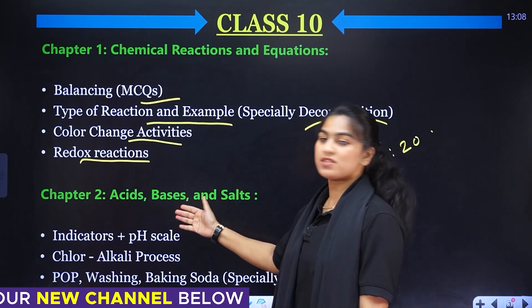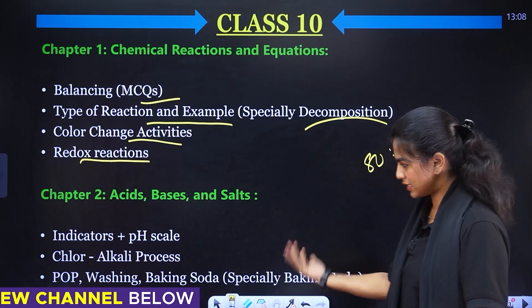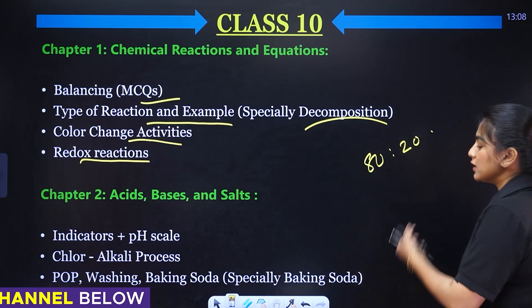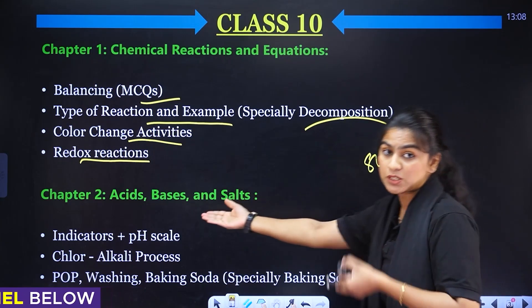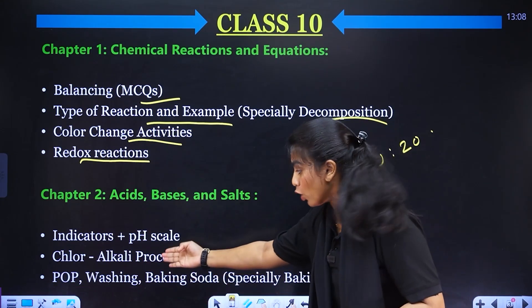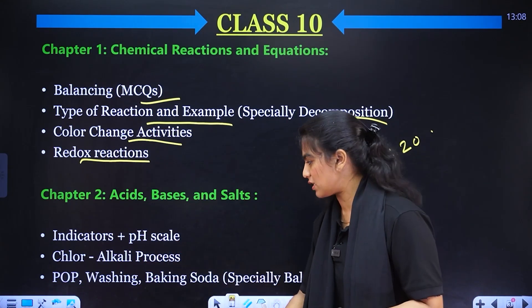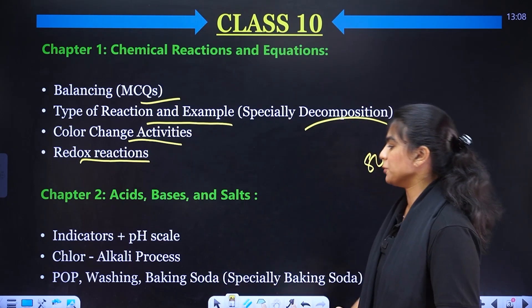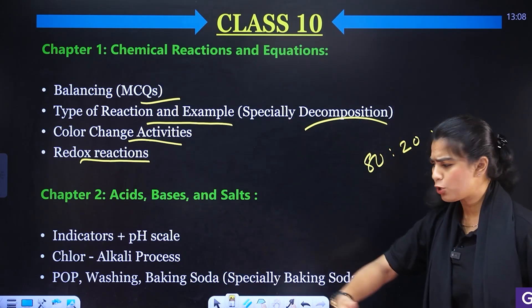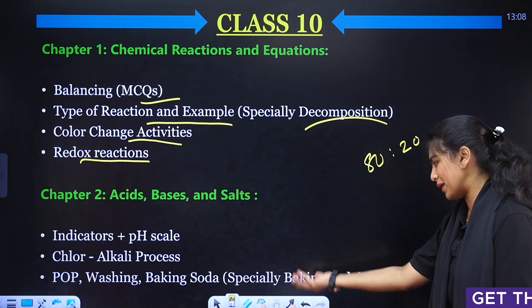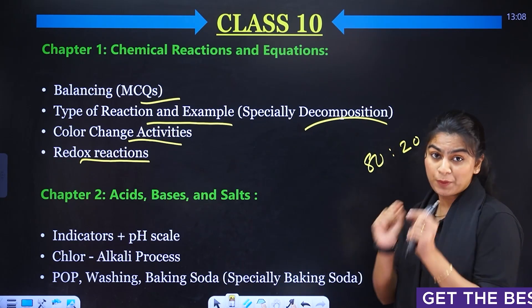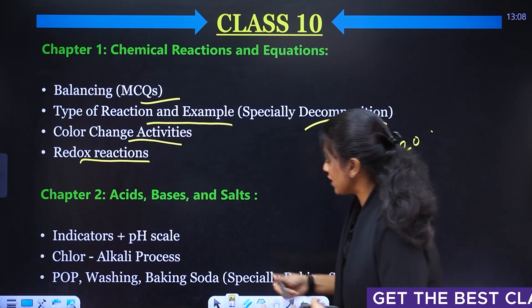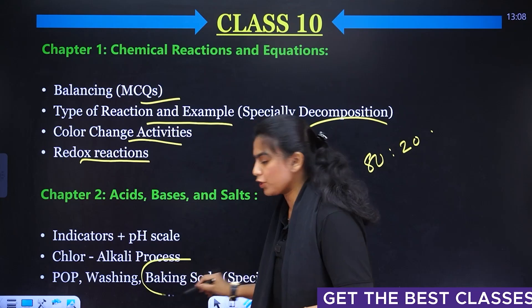In the second chapter, Acids, Bases and Salt, there are Indicators plus pH scale questions. There are more questions about the Chloralkali Process. POP, Washing Soda, and Baking Soda are important topics — especially Baking Soda is very important.